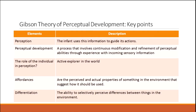Gibson's theory of perceptual development highlights several key elements. Perception refers to how the infant uses information to guide its actions. Perceptual development is a process involving continuous modification and refinement of perceptual abilities through experience with incoming sensory information. The role of the individual is as an active explorer in the world. Affordances are the perceived and actual properties of something in the environment that suggest how it should be used. Differentiation is the ability to selectively perceive differences between things in the environment.